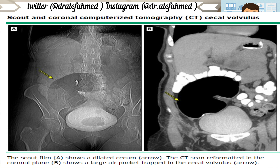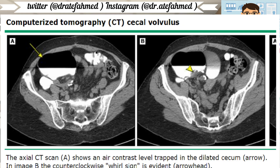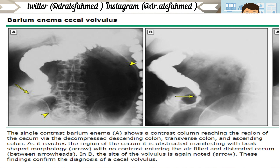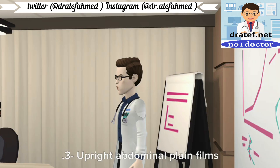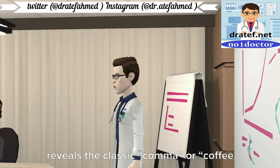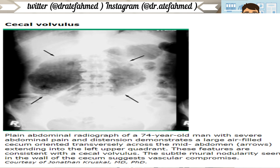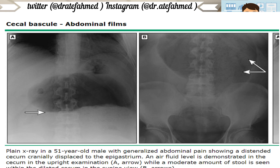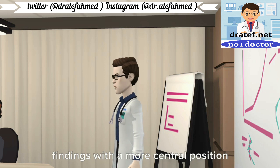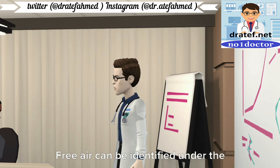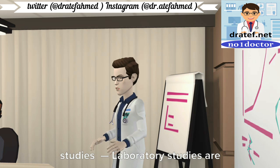A single contrast barium or Hypaque enema demonstrates a tapered bird's beak narrowing in the right colon, confirming cecal volvulus. In cecal bascule, the termination of contrast is rounded. In a retrospective review of 568 patients, barium enema was diagnostic in 88 percent and abdominal plain film was diagnostic in only 17.3 percent. Upright abdominal plain films reveal the classic comma or coffee bean shaped cecum with an air-fluid level in approximately 25 percent of patients. The dilated cecum is typically displaced medially and superiorly, the proximal small bowel is distended, and the distal colon is decompressed.